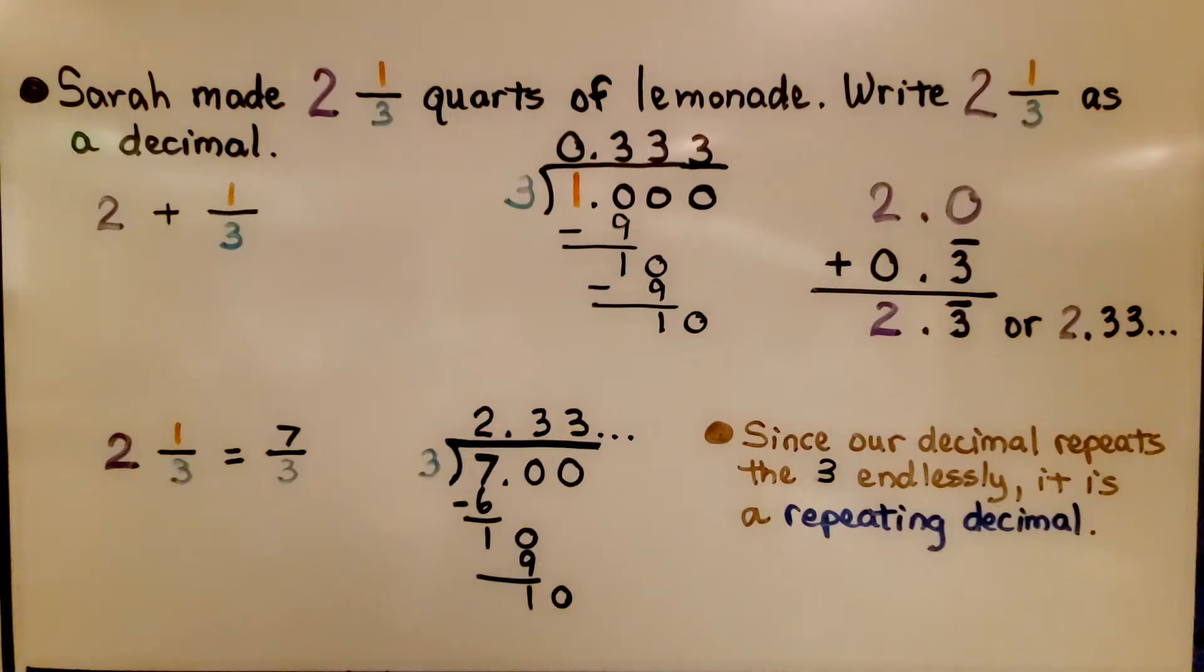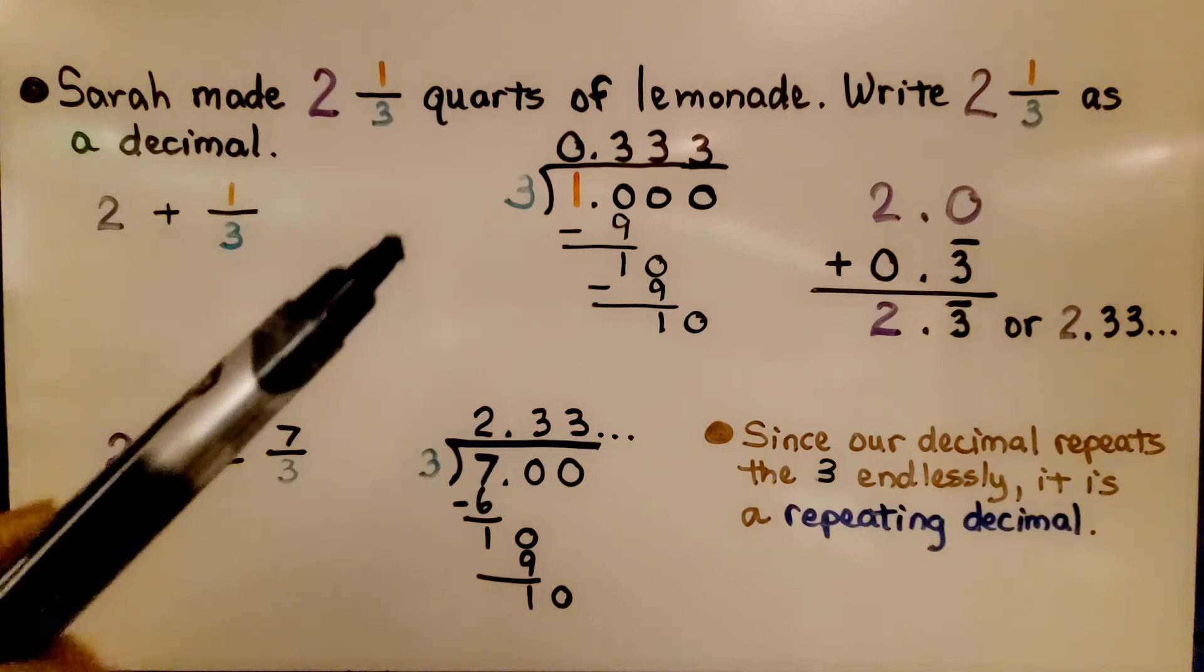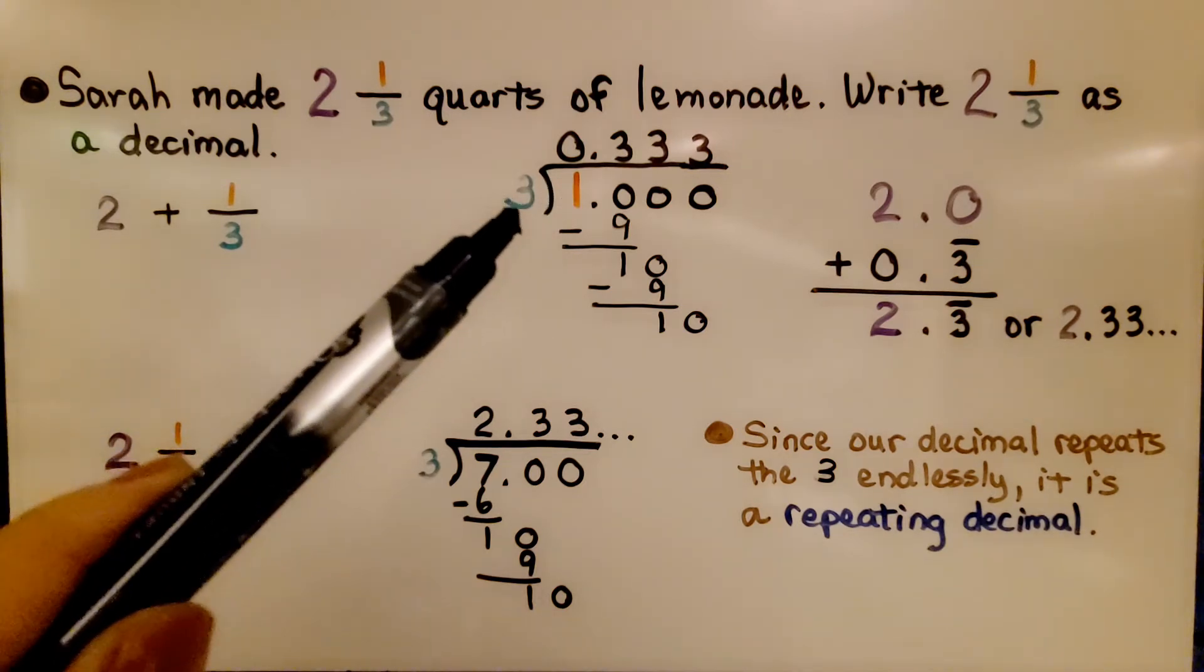Sarah made 2 and 1/3 quarts of lemonade. Write 2 and 1/3 as a decimal. We have 2 plus 1/3. We set the 2 aside and do 1 divided by 3.